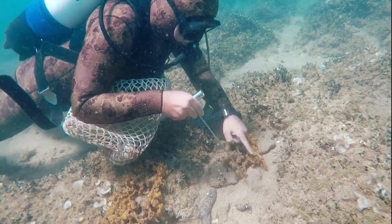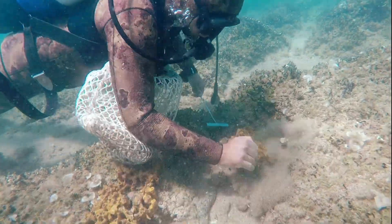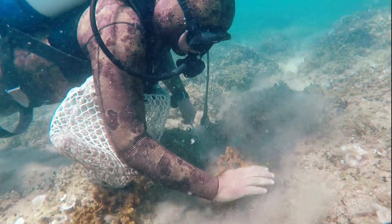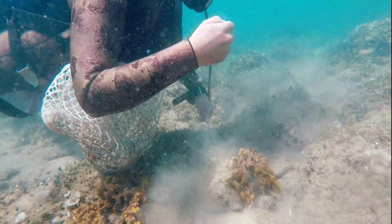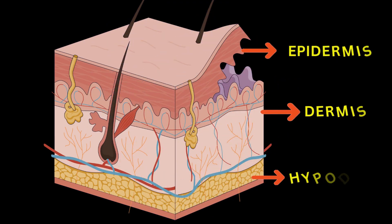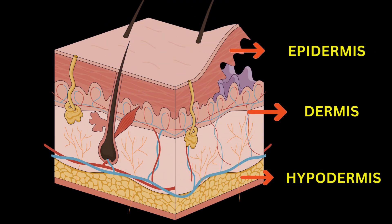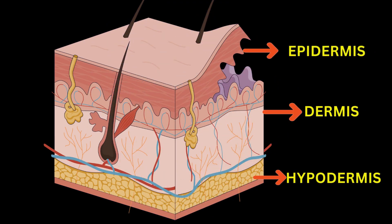Now we will dive deep into the skin structures. The three layers of the skin are the epidermis, dermis, and hypodermis.